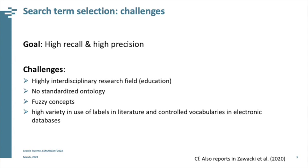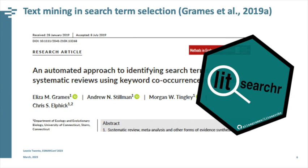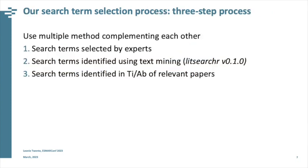We needed to identify all synonyms to avoid missing relevant papers, while limiting retrieved literature. We found that Eliza Grames had implemented an approach for optimizing search term selection for systematic reviews in ecology and evolution, publishing the LitSearchR package in R. This approach reduces biases because it does not rely solely on the researcher's grasp of the literature. It uses keyword co-occurrence networks to identify search terms most relevant or indicative of a given set of articles.